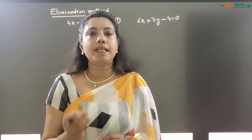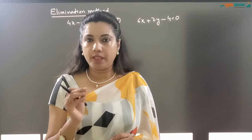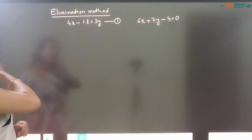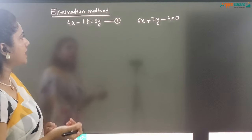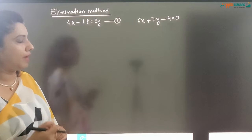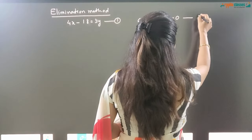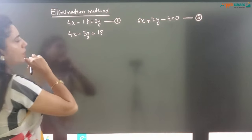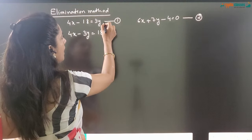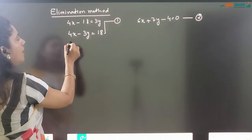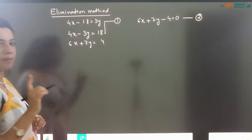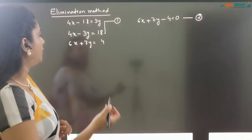Now let me start with the next method, the elimination method. The two equations given are: 4x minus 18 is equal to 3y — equation 1 — and 6x plus 7y minus 4 — equation 2. I will modify the equations: rearranging equation 1 gives 4x minus 3y equals 18, and equation 2 becomes 6x plus 7y equals 4. I put the constant term on the right-hand side and the variables on the left-hand side.